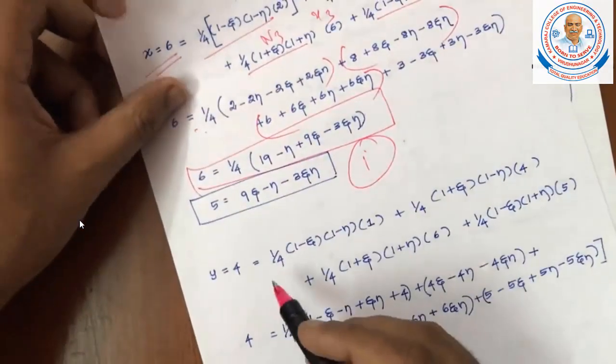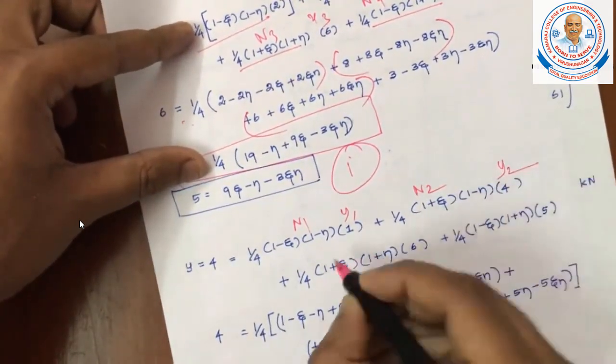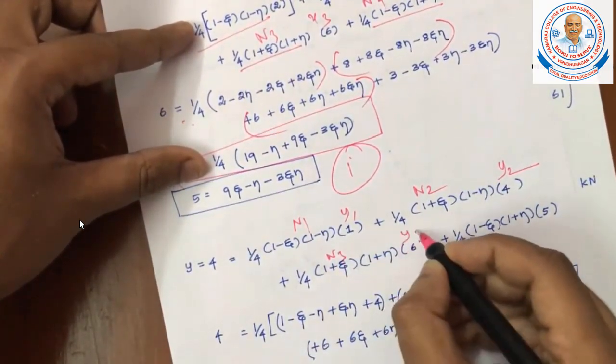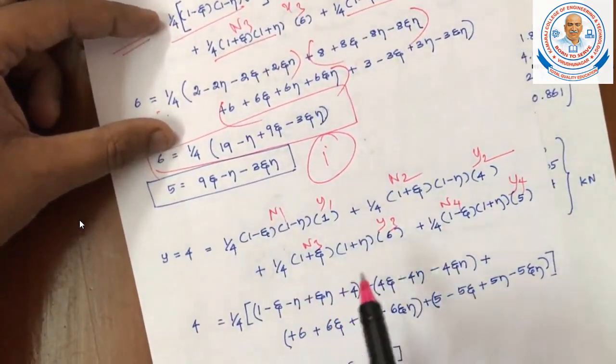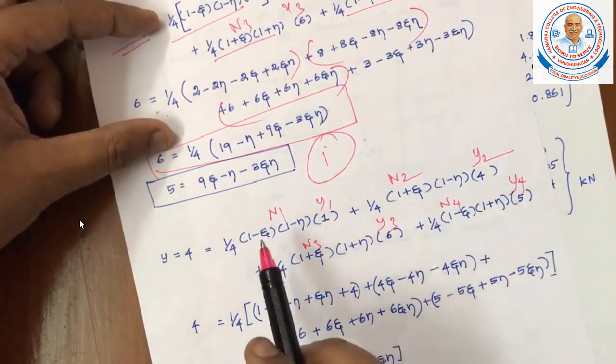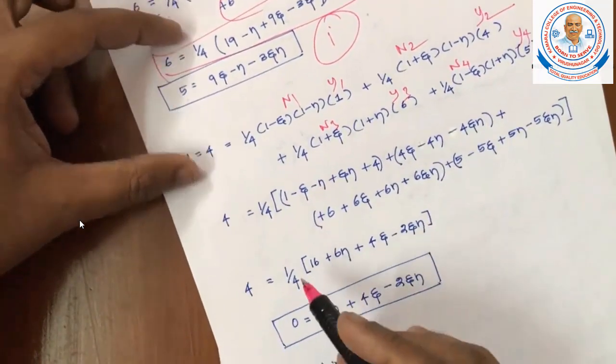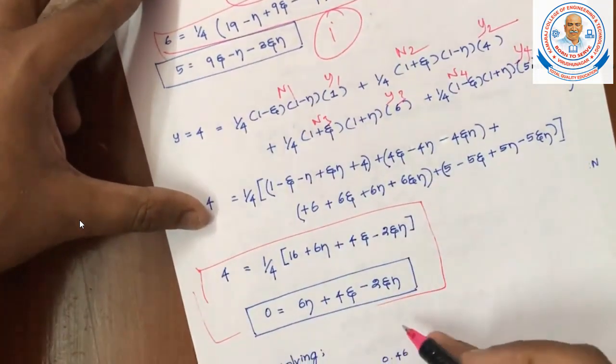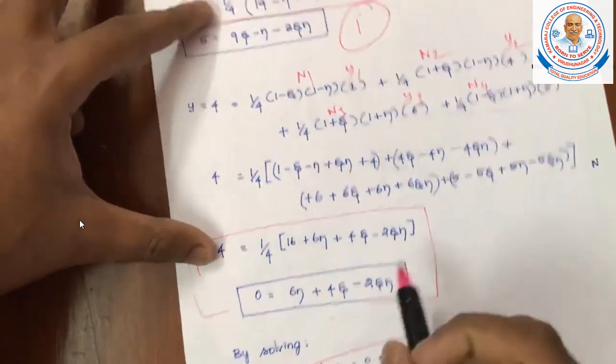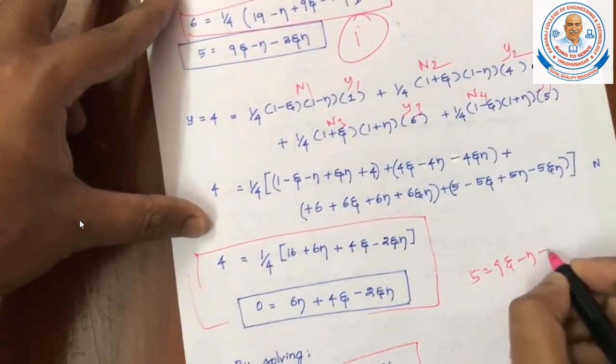Similarly, next isoparametric formulation for Y. Similarly, repeat: N1*Y1, N2*Y2, N3*Y3, and N4*Y4. Y equal to 4 is given in the question. If you solve the problem, here also you will get one lengthy equation. After cross multiply, at last, you will get another equation. In the equation, 0 equal to 6 epsilon plus 4 theta minus 2 epsilon theta. Now, you have to solve these two equations.